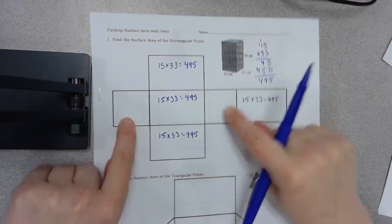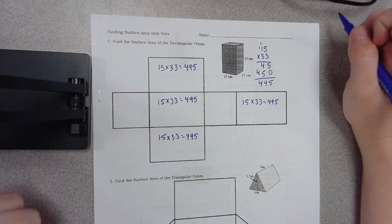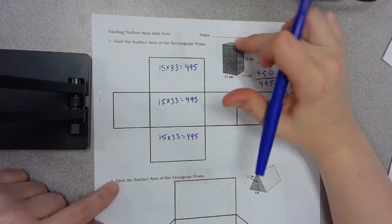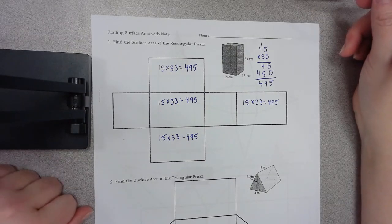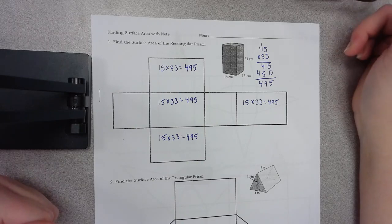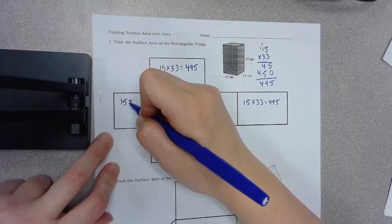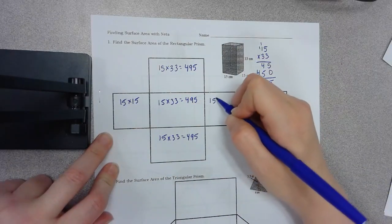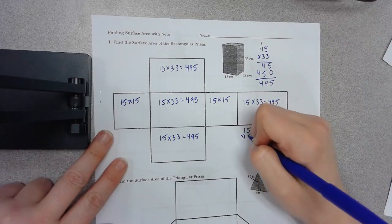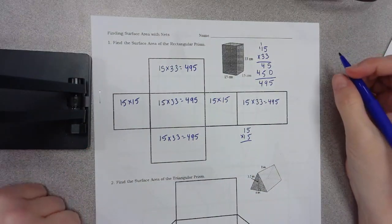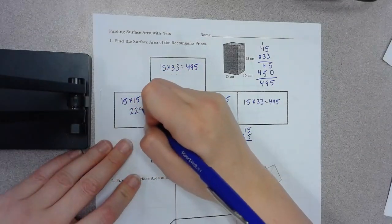Now these two, which are these top two right here at the top and the bottom, those are different. Think about which numbers you're going to multiply for this top right here. Are you going to use the 15s or are you going to use the 33? And you should be saying to yourself, well I already used the 33 and I haven't used that other 15 yet. So 15 times 15. You can pause the video and figure out what 15 times 15 is. And if you're back you know that 15 times 15 is 225.